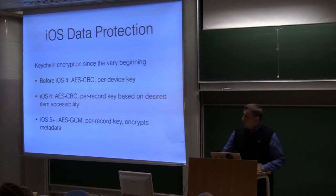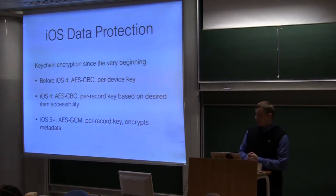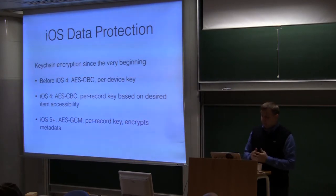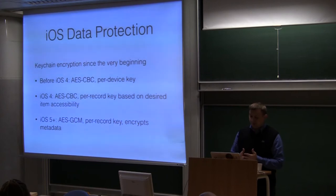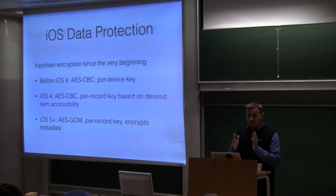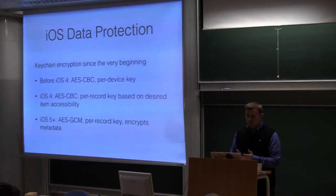Those technologies include several different mechanisms. One very important one is the keychain — a central storage of passwords managed by iOS. Keychain was there since the very first iPhone. But before iOS 4, it was not very good. The encryption key used to protect passwords was fixed for a particular device — every device came with a hard-coded key protecting the keychain. No matter how many times you reset or wiped your device, the key remained the same.